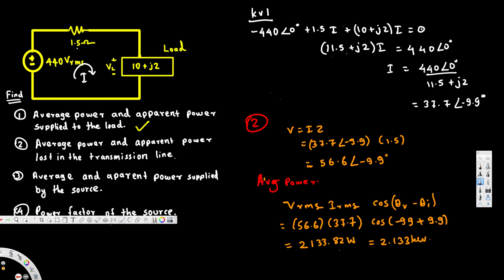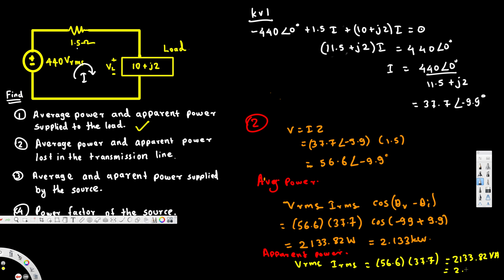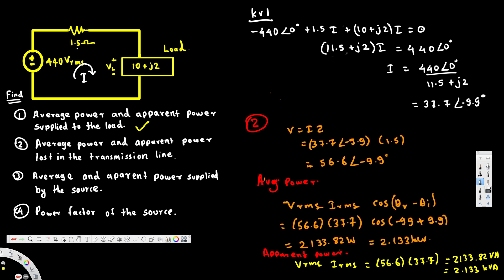For apparent power in the transmission line, S = V_rms × I_rms = 56.6 × 37.7. Since cos(0°) = 1, the apparent power equals the average power: 2,133.82 VA, or 2.133 kVA. This completes the second part — average power and apparent power lost in the transmission line.